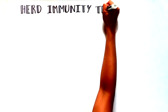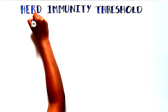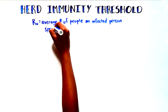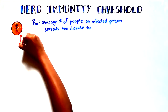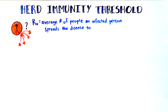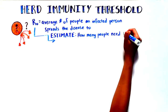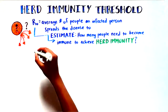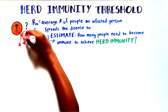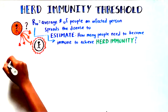The herd immunity threshold is calculated based on a number called R0, which refers to the average number of people an infected person spreads the disease to in a completely susceptible population. Using the estimated R0 for a pathogen, we can estimate the number of people who need to become immune for herd immunity to take effect. The higher the R0, the more people who need to develop immunity to block sustained transmission.